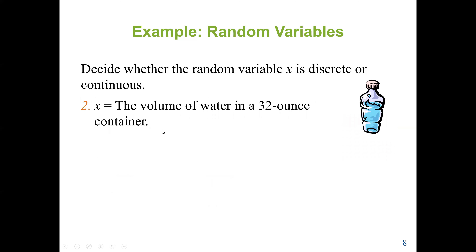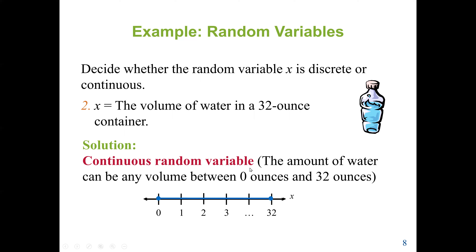The second example: the volume of water in a 32-ounce container. There is no way to count the volume of water — we can only measure it. The amount of water can be any volume between 0 and 32 ounces. If the container is empty it's 0; if full it's 32. So this is a continuous random variable, based on measurement.